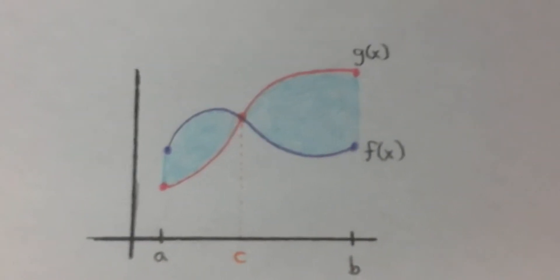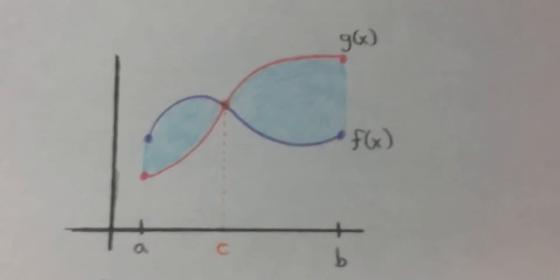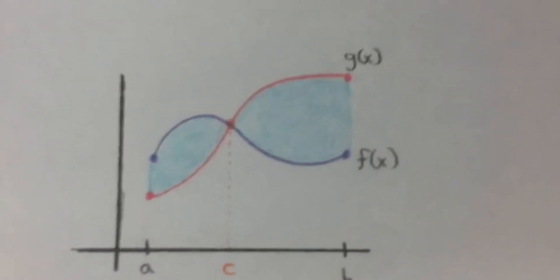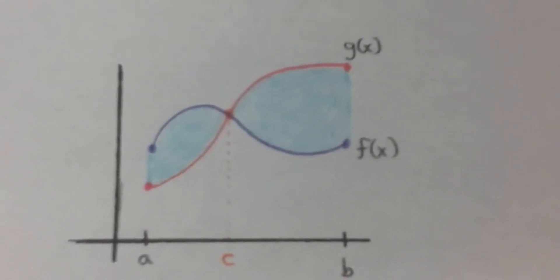Let's look at an example of what happens if we want to find the area that's bounded by two curves, but the curves cross each other. How do we treat that kind of situation?